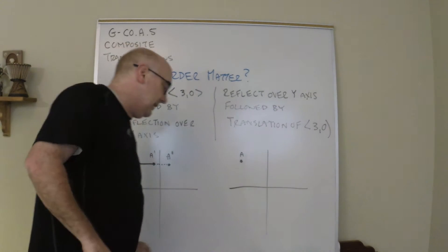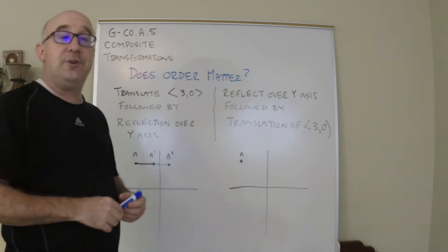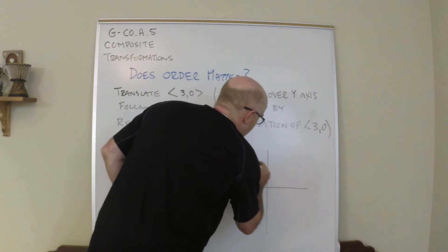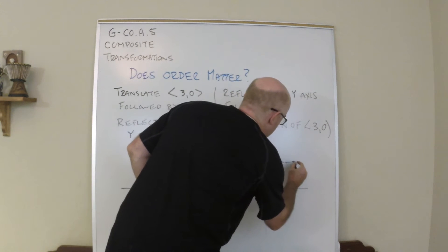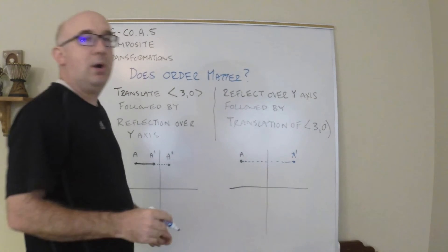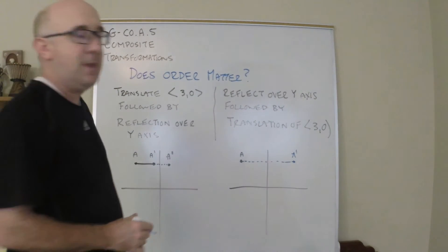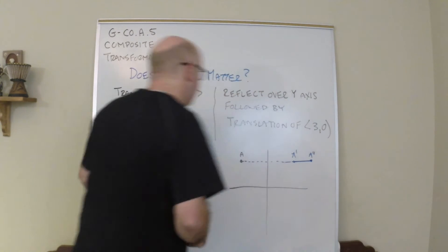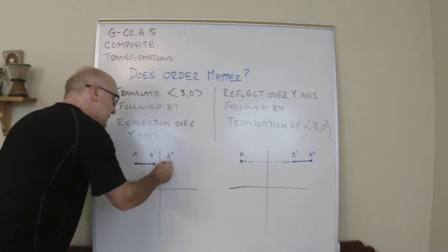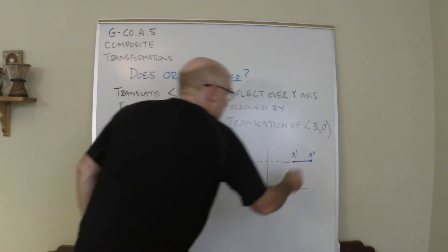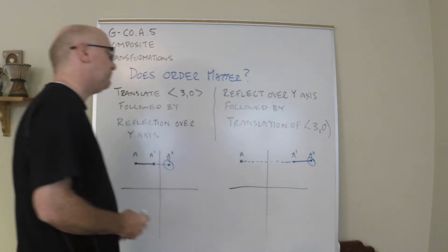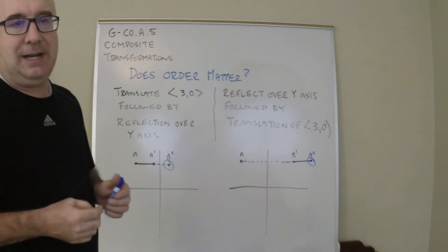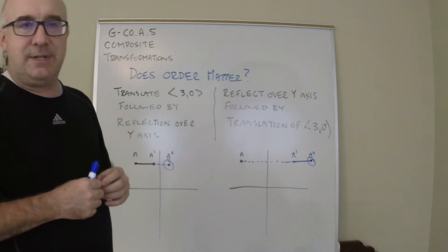What would happen if we did it in the other order? If we first reflected and then translated, so a reflection first would place A prime somewhere close to that location, and then a translation of three to the right places it here. Notice this location and this location—very different spots. The order matters greatly.